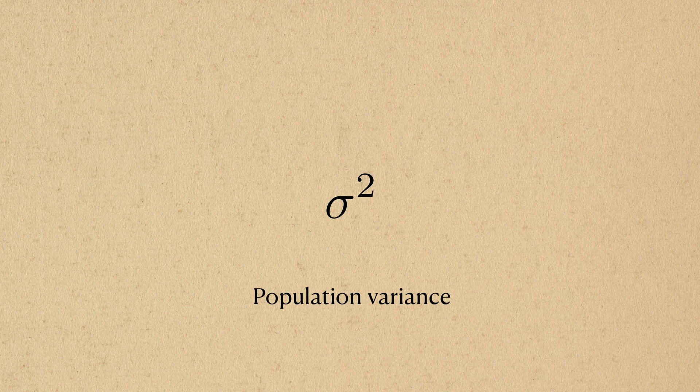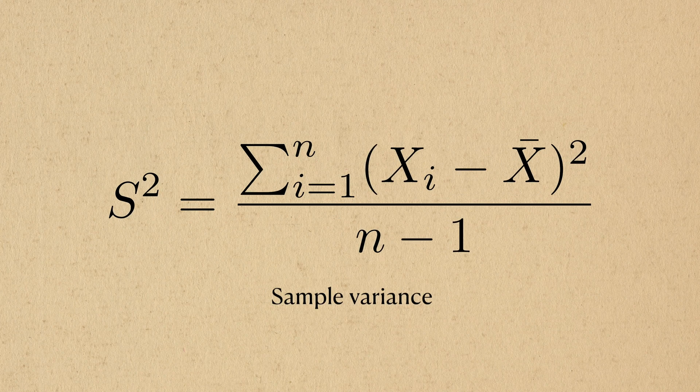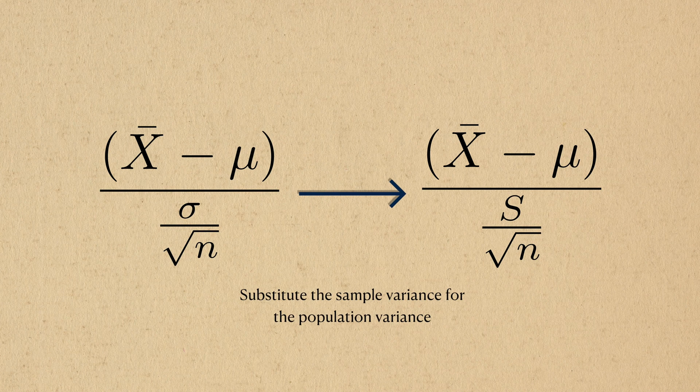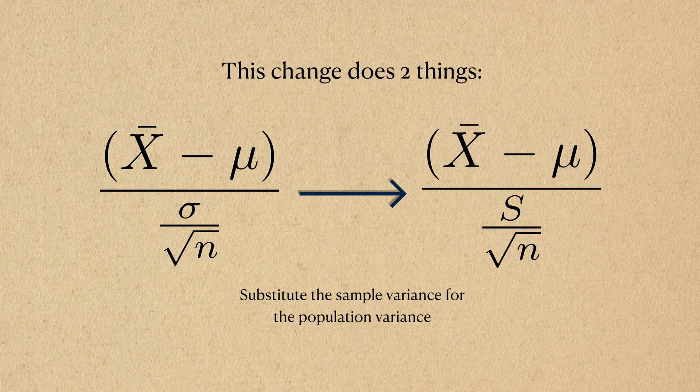Instead of using the population variance, what if we replace it with the sample variance? The sample variance is calculated via this equation, and I'll denote it as s². By replacing the population variance with the sample variance, we've got two things done.